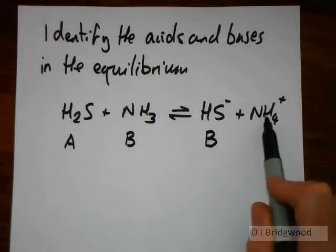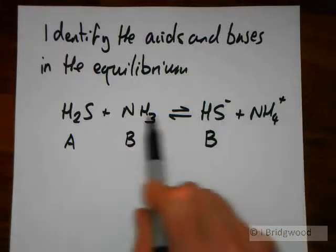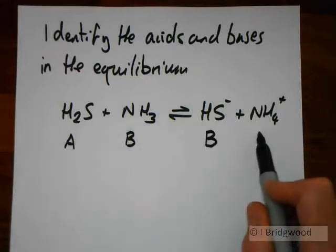And NH4 is donating the proton to HS, itself going to NH3, donating the proton to form H2S. So that is our acid.